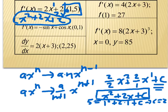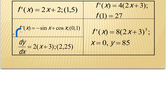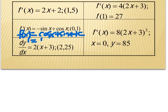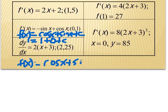For the second problem, the derivative is negative sine x plus cosine x. From our trig knowledge, the function that gives negative sine x is cosine x, and the function whose derivative is cosine is sine x. Add plus c, then use the initial condition: replace x with 0 and set equal to 1. Cosine(0) is 1, sine(0) is 0, plus c equals 1, so c equals 0. The antiderivative is cosine x plus sine x.